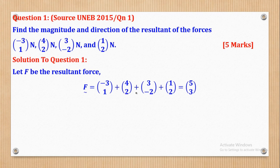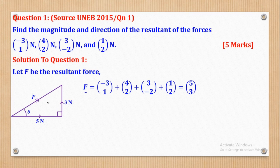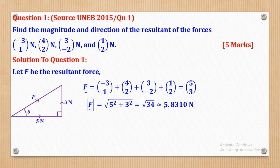Now that I've got the resultant force in vector form, the question wants magnitude and direction. I'll draw a right-angled triangle representing this resultant force. The horizontal component is positive 5, going to the right, and the vertical component is positive 3, going upward. The hypotenuse from start to end represents our resultant force. The magnitude using Pythagoras' theorem will be √(5² + 3²) = 5.8310 Newtons.